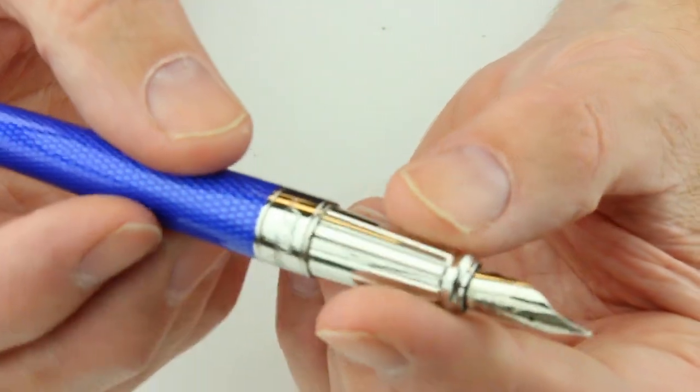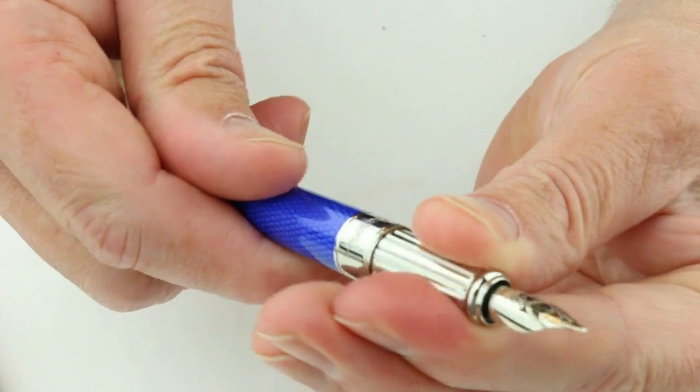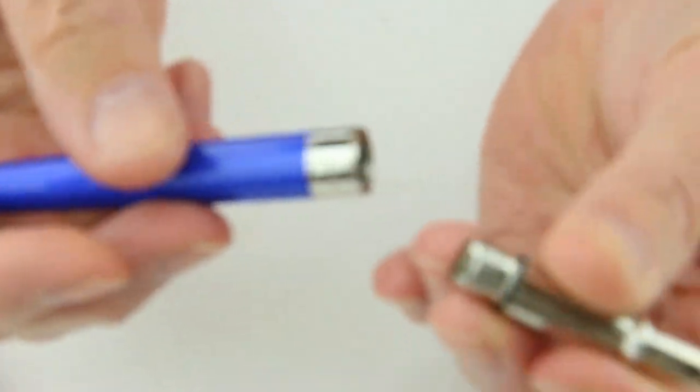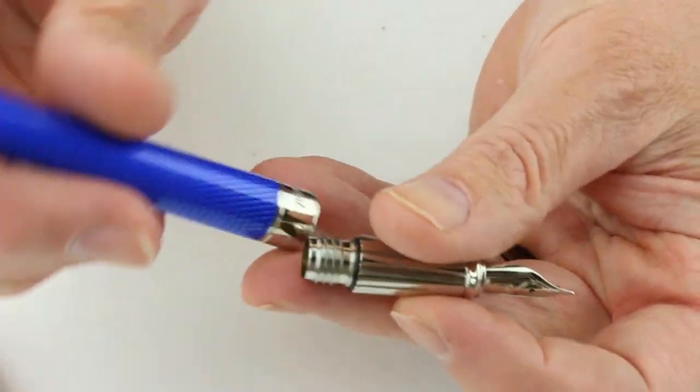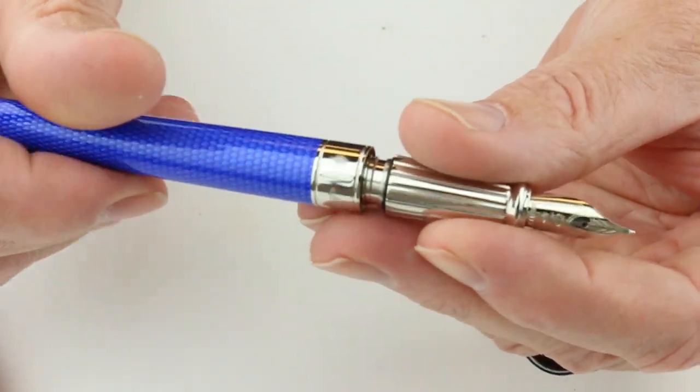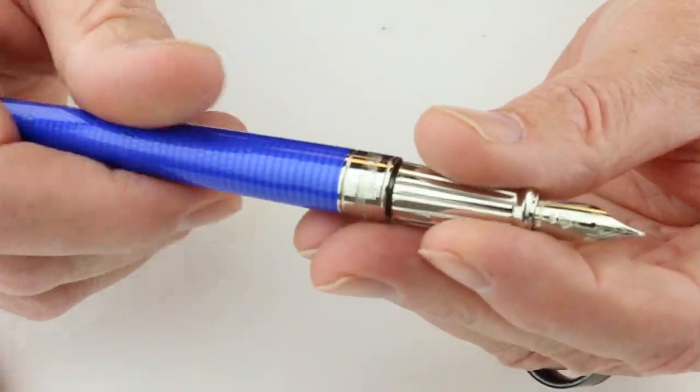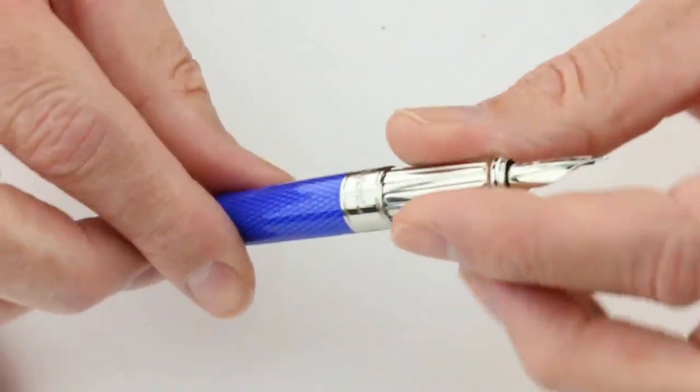It has a black feed. It is a cartridge converter pen, so the section will unscrew from the pen. There will be an ink cartridge as well as a converter for the pen. It is going to take a standard international converter.